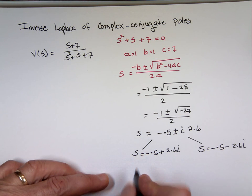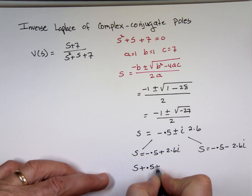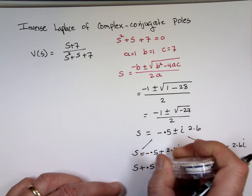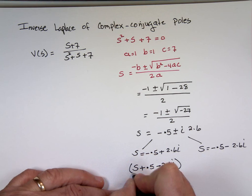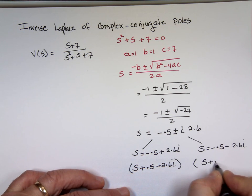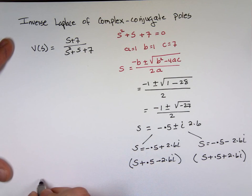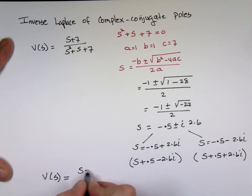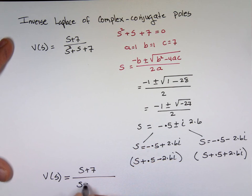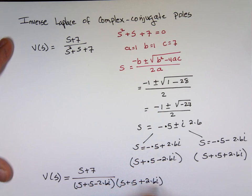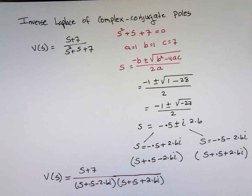So, when you bring them to this side, that becomes your factor. It becomes S plus 0.5 minus 2.6i, and S plus 0.5 plus 2.6i. So, I could take that problem, V(s), and write that S plus 7 over S plus 0.5 minus 2.6i times S plus 0.5 plus 2.6i.